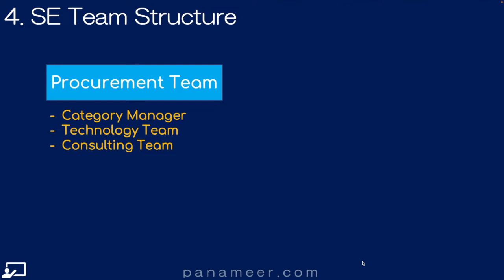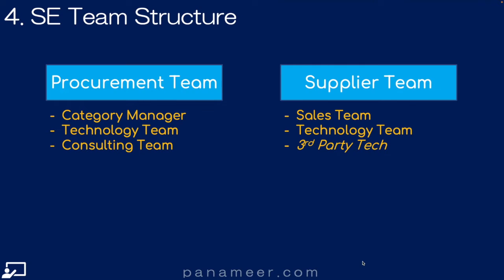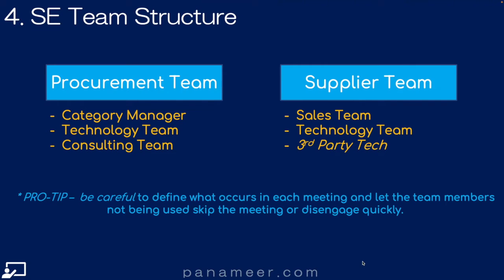Slide 4: Team Structure. Enablements take on average 30 to 90 days of elapsed time to complete, though you're not busy that entire time. The teams on this slide bring all the skills necessary within that 90-day window. The procurement team should look like this, and the supplier team should look like this. Be careful to define what occurs in each meeting and let team members disengage when they're not needed — otherwise they'll get frustrated, particularly your external suppliers since you don't own their time.